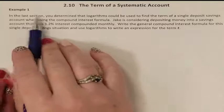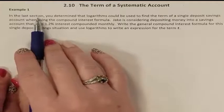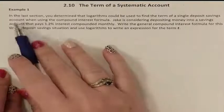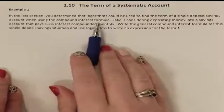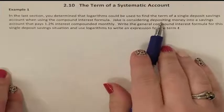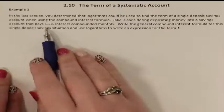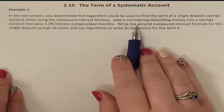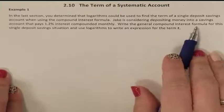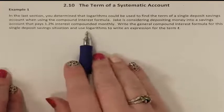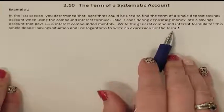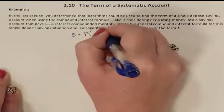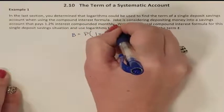Example number one. In our last section, which was 2.9, you determined logarithms could be used for a single deposit savings account for a compound interest formula. Jake is considering depositing money into a savings account that pays 1.2% interest compounded monthly. They want us to write the general compound interest formula for this single deposit using logarithms and solving for t. We have the formula B equals P times (1 plus R over N) all to the Nt.